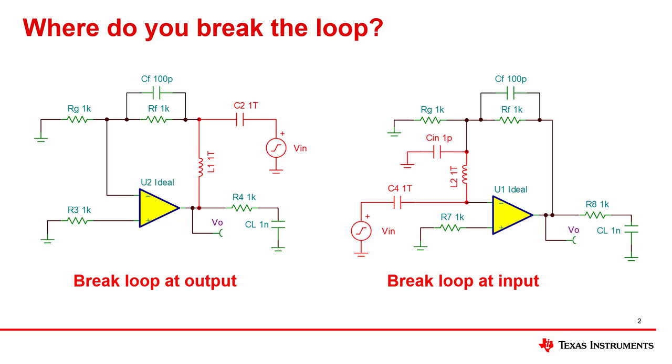One issue with this method is that any loading from the feedback network on the output impedance of the amplifier is effectively eliminated. For example, the feedback network CF, RF, and RG may interact with the op-amp output impedance in a closed-loop condition.